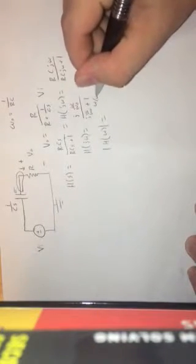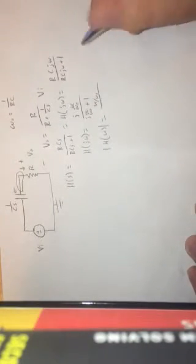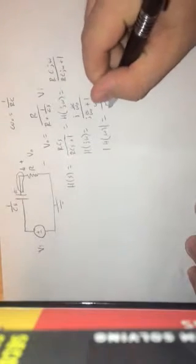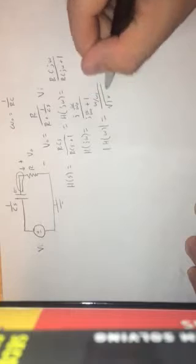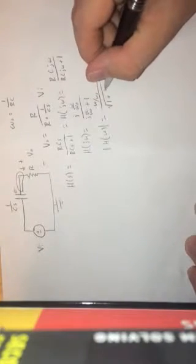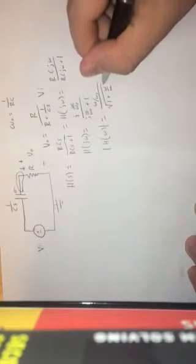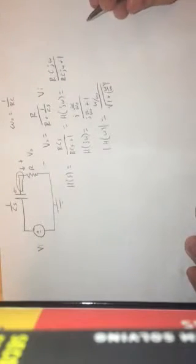We get omega divided by omega naught divided by the square root, because the magnitude of 1 squared is equal to 1, plus omega divided by omega naught squared, quantity squared. And there's our magnitude response to this extremely simple circuit.